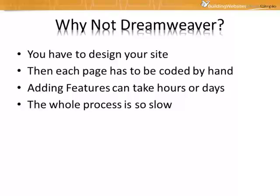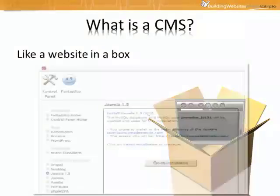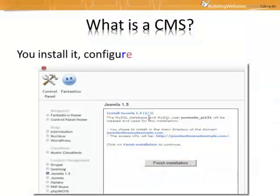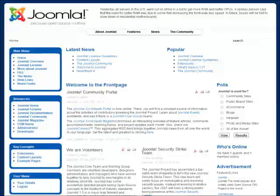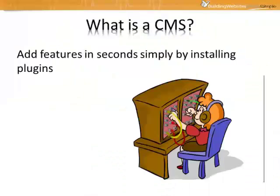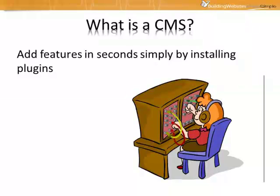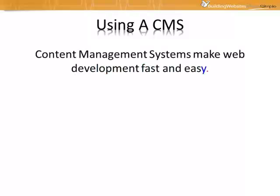That's why these days we use Content Management Systems to build our sites. So what exactly is a Content Management System? Well, basically, it's like a website in a box. You install it, configure it, and it's done. You can change the entire look and feel of your website simply by installing a template. And adding features is a cinch by simply installing plugins into your website. Overall, Content Management Systems make web development fast and easy.